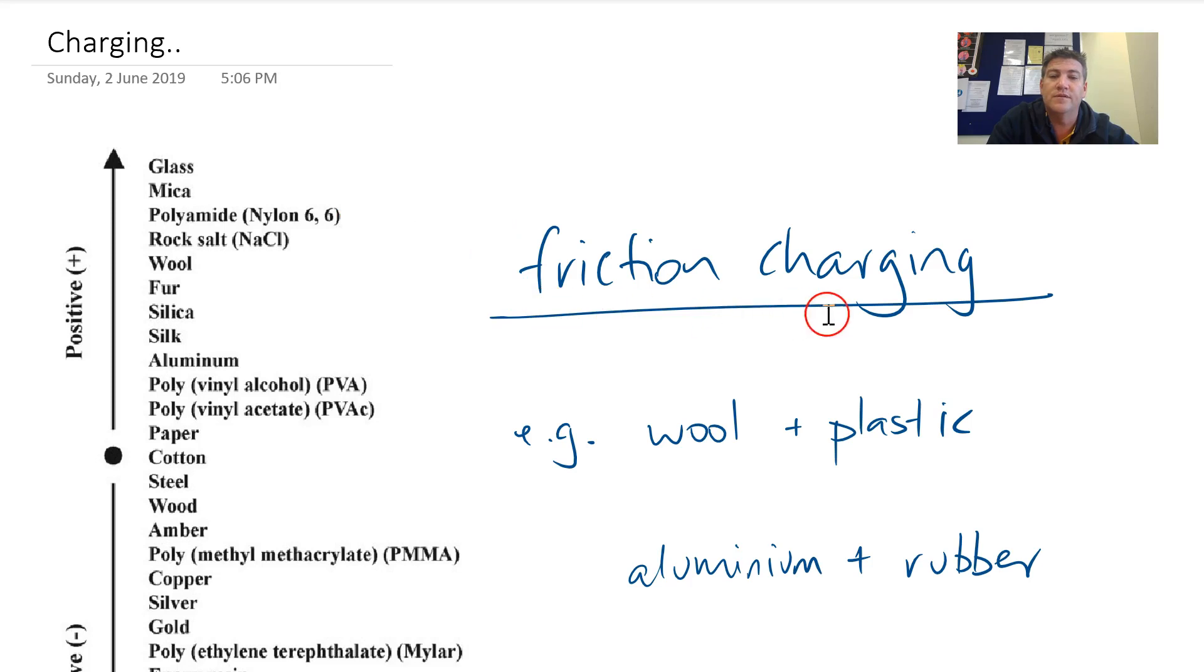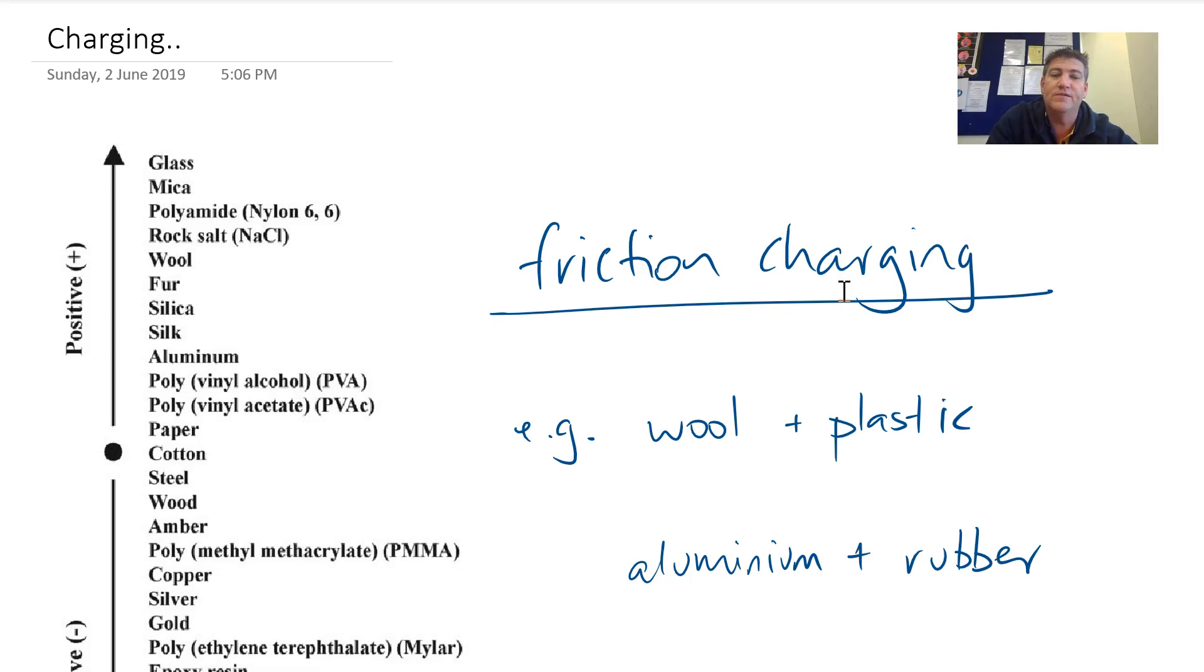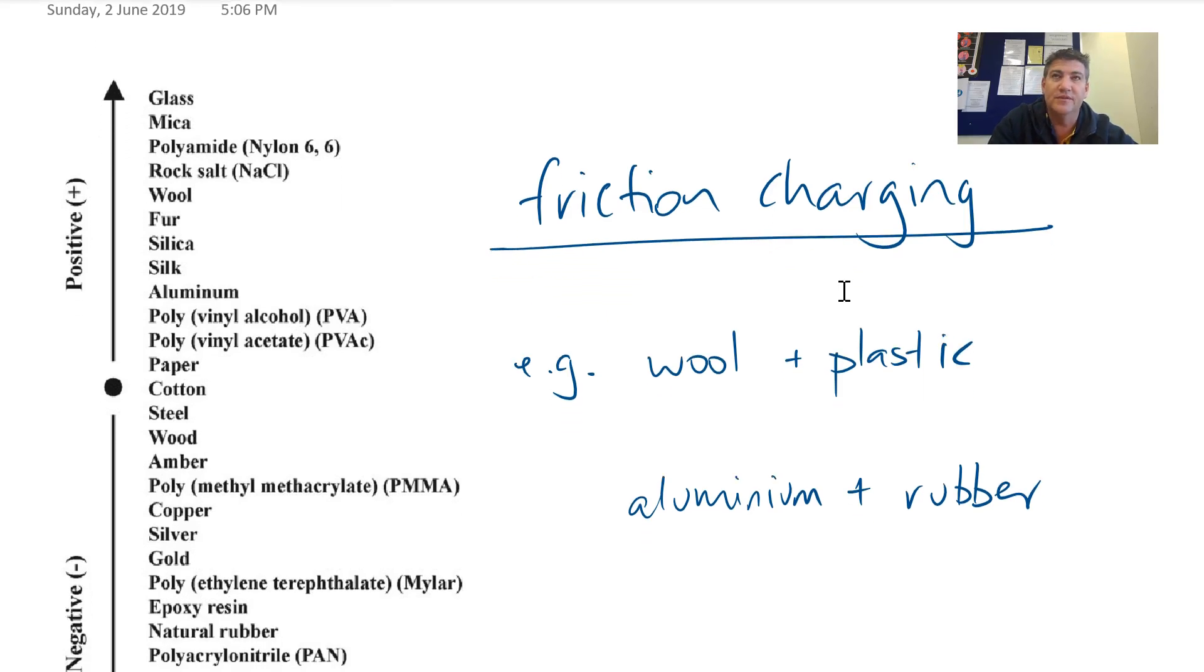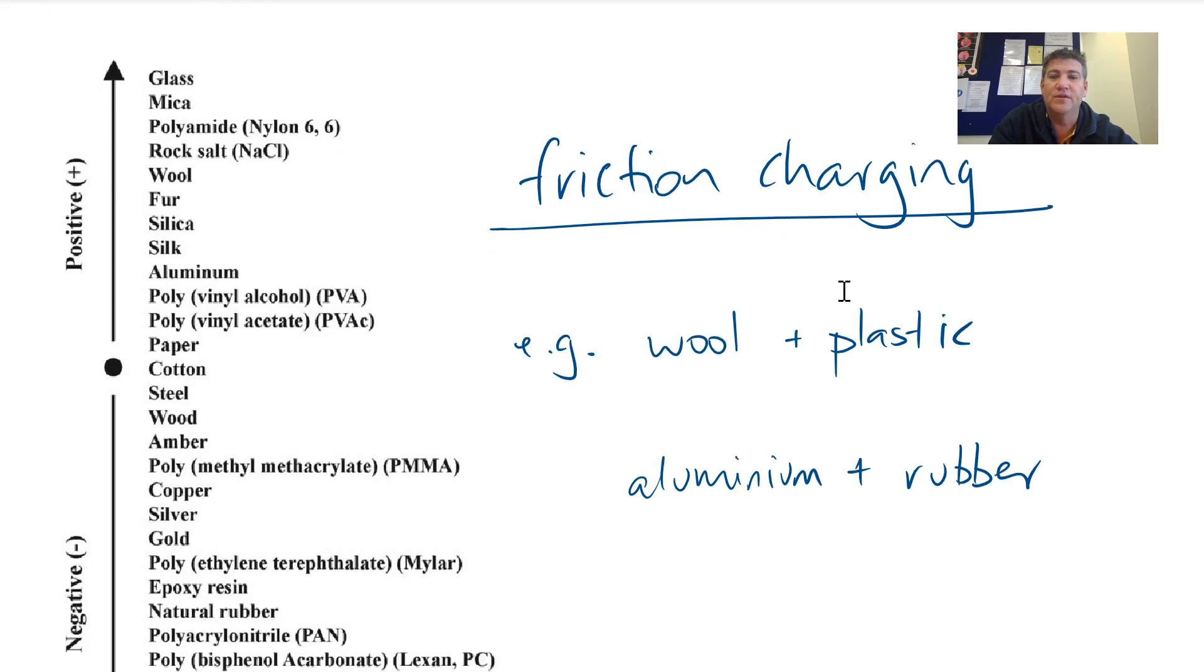So the first thing I want to talk about is friction charging. Sometimes you'll hear me refer to this as triboelectric charging and it's basically rubbing two surfaces together so that one strips electrons away from the other. So whenever you have two objects, one of them has a greater affinity for electrons. So basically things want more electrons, want the electrons in contact with each other more so than something else.